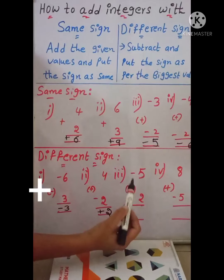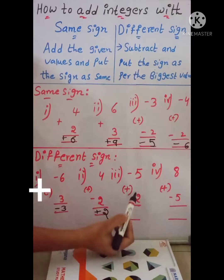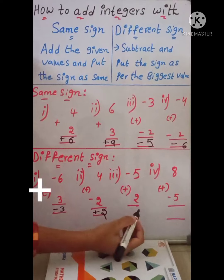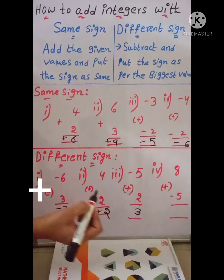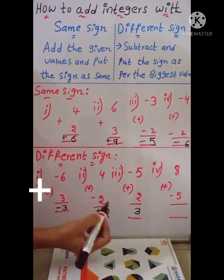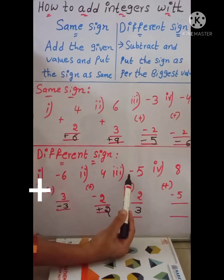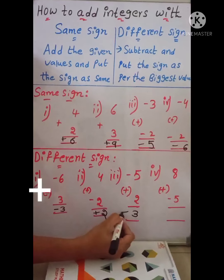The third example is minus 5 plus 2. These two numbers have different signs, so we should subtract the smaller number from the bigger number: 5 minus 2 equals 3. What about the sign? 5 is the biggest value and it has the negative symbol, so put the sign as negative. The answer is negative 3.